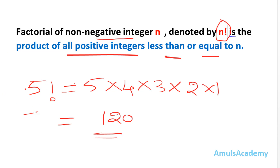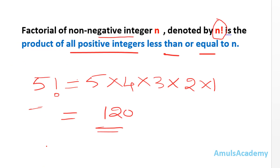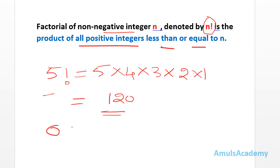The factorial of any number is the product of all positive integers less than or equal to that number. This definition applies to positive integers, and the factorial of 0 is 1. Next we will see how to write a Python program to print the factorial of any positive integer or 0.